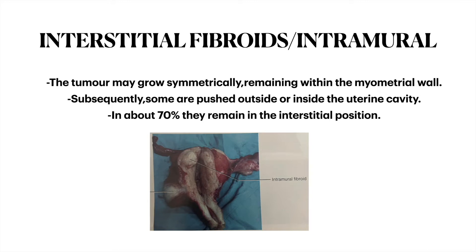What are interstitial fibroids? They are also called intramural fibroids. The tumor may grow symmetrically remaining within the myometrial ball, and subsequently some are pushed outside or inside the uterine cavity. In about 70% they remain in the interstitial position. This picture shows the cut section of the uterus with an intramural fibroid.